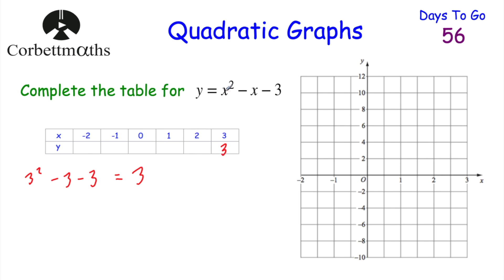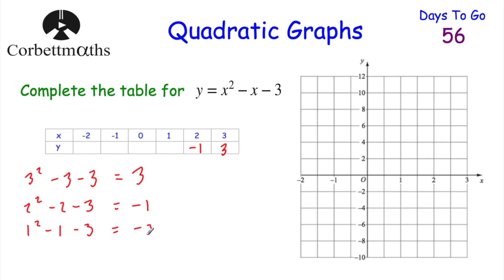When x equals 2, we get 2 squared minus 2 minus 3 — that's 4 minus 2 is 2, minus 3 is negative 1. When x equals 1, we get 1 squared minus 1 minus 3 — that's 1 minus 1 is 0, minus 3 is negative 3. When x equals 0, we get 0 squared minus 0 minus 3, which equals negative 3.